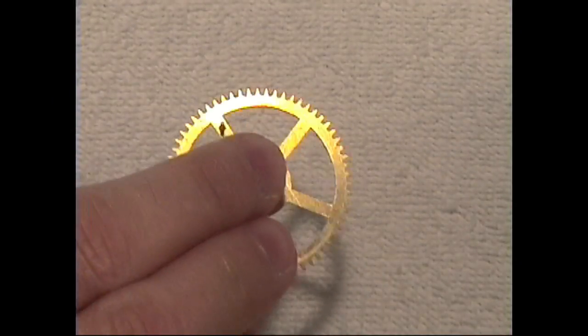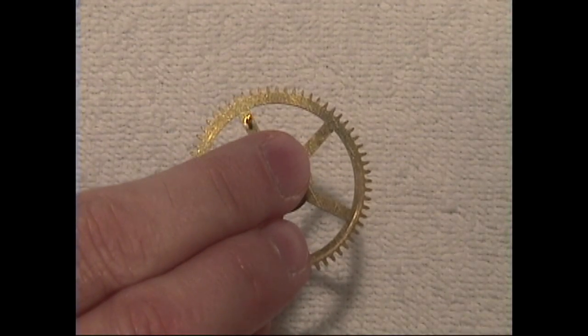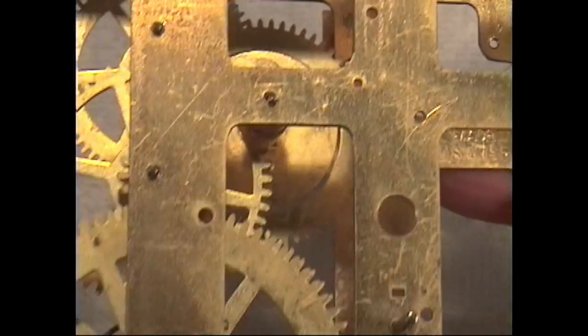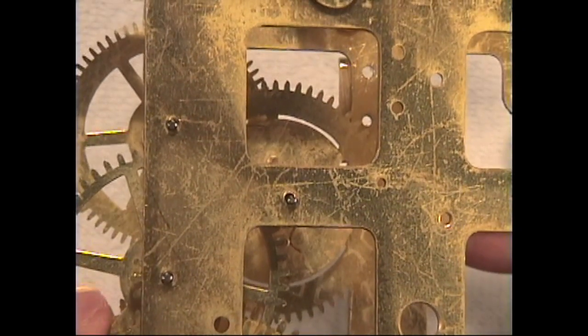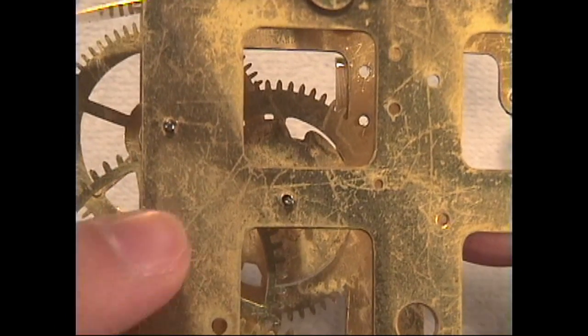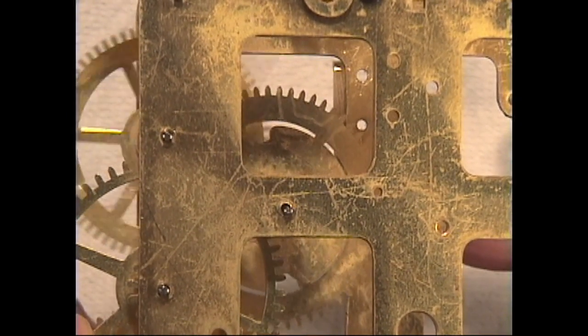And what happens is that the wheel that was previously standing straight up is now tilting and your time train or your strike train becomes out of alignment and that affects the ability of your movement to keep proper time and operate properly. So this is an area that we're going to need to rebush in order to repair that particular problem.